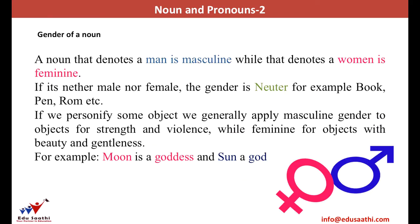We can classify nouns as masculine or feminine based on their gender. Masculine is the gender that associates to men, whereas feminine is the gender that associates to women. There are things that do not have any gender — for example, a table or a chair. They cannot be classified as masculine or feminine. We generally say these things have neuter gender — that is, they are neutral in terms of gender.